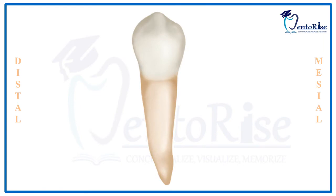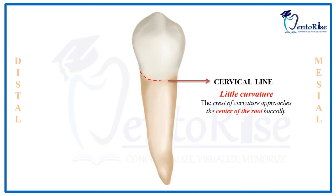The cervical line of permanent mandibular 1st premolars shows a little curvature, with the crest of curvature approaching the center of the root buccally.